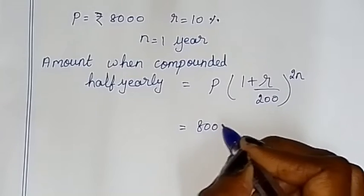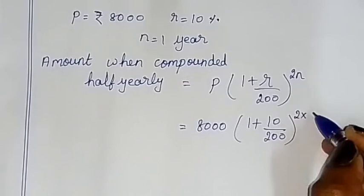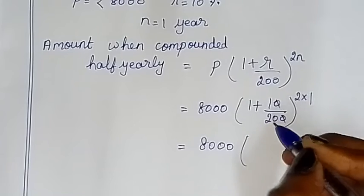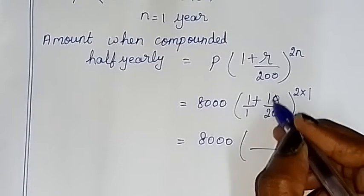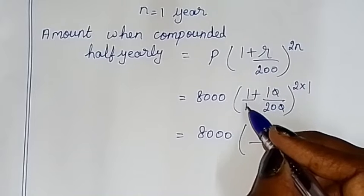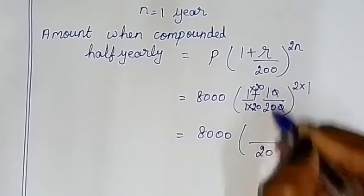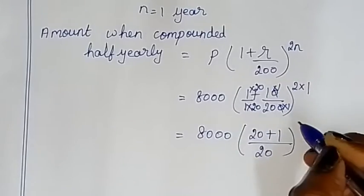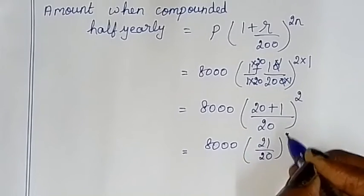So this is equal to principal value 8,000 into (1 + 10 by 200) whole power 2, since n equals 1. Simplifying: cancel the zeros in 10 by 200, giving 1 by 20. Then 1 plus 1 by 20 — converting with denominator 20 — gives 21 by 20. So this equals 8,000 into (21 by 20) whole square.